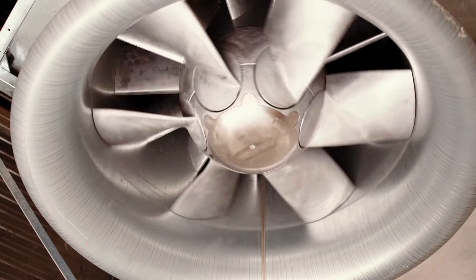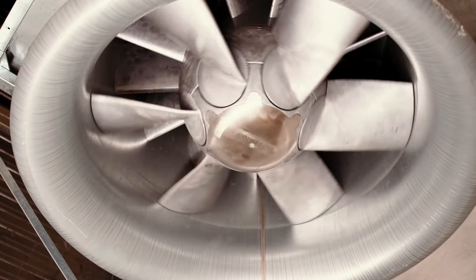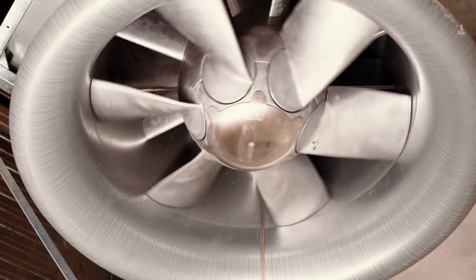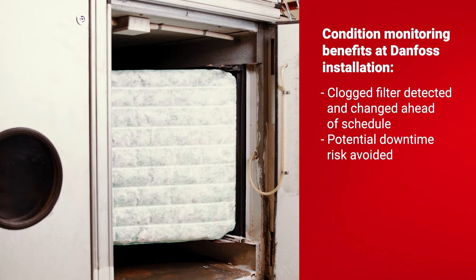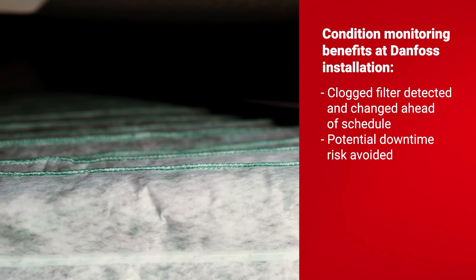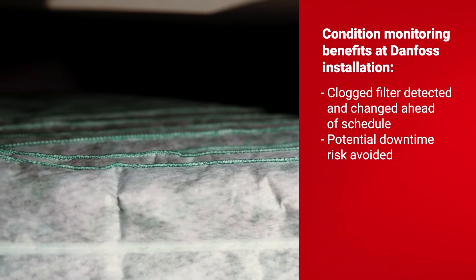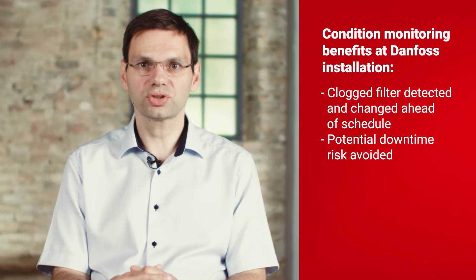The air is provided by a ventilation installation. There is a fan driven by an electric motor. There are many things that can go wrong with a ventilation installation. For example, the motor can get damaged, then the fan stops. Or there can be some mechanical problem and the entire fan starts to vibrate and at some point it will stop. Or the air filters can get clogged, and then you don't run the installation efficiently.